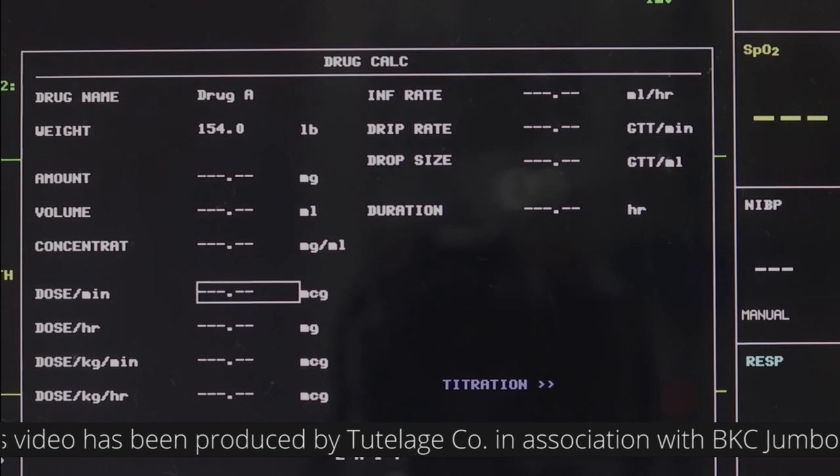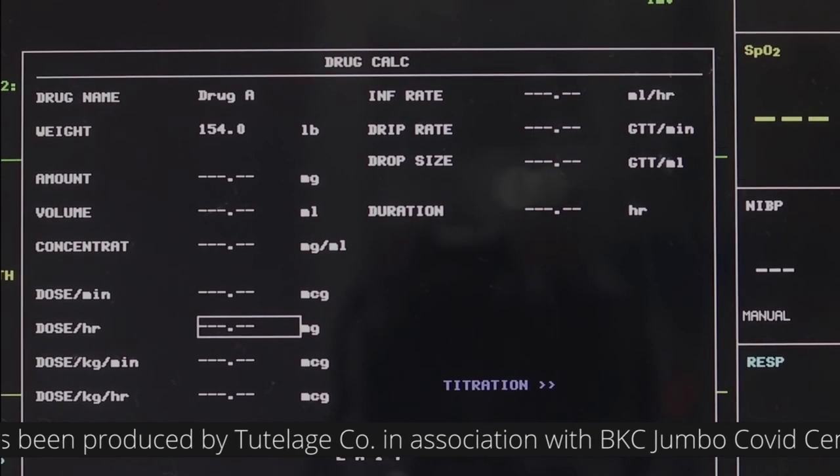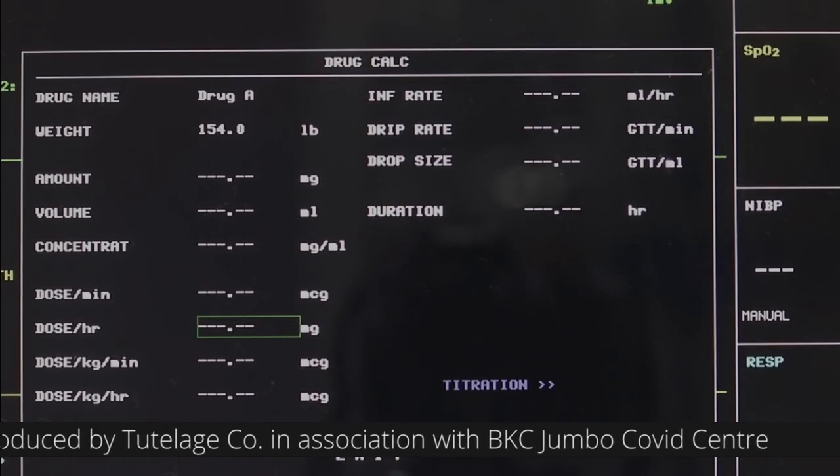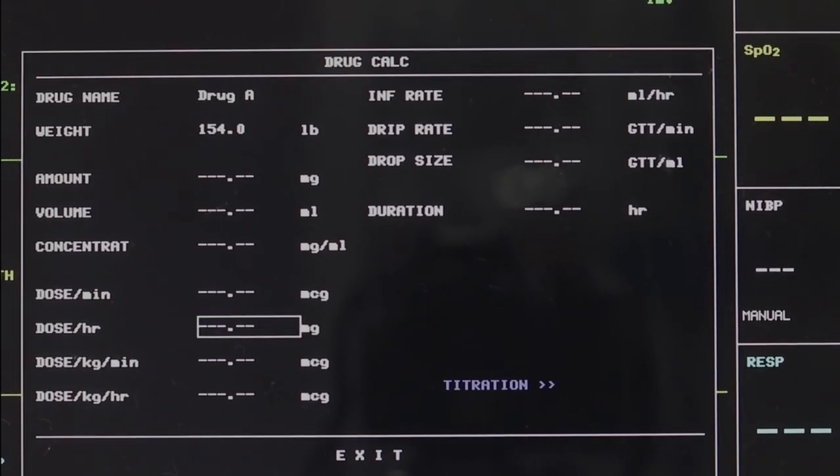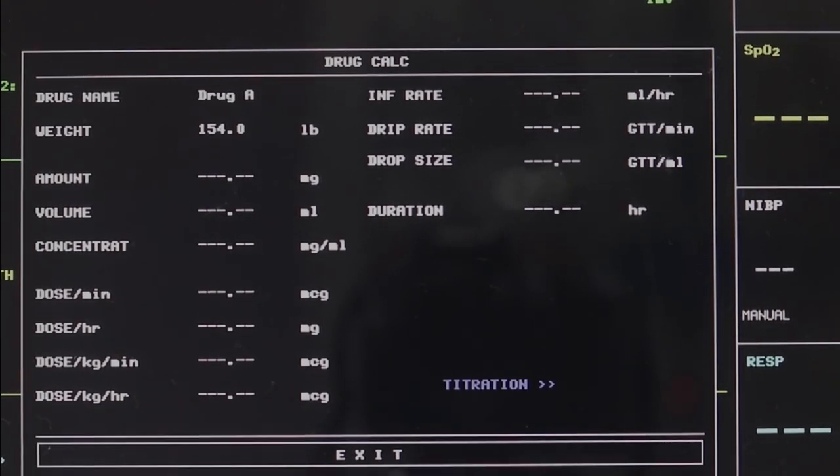In the Drug Calculation window, the operator should first select the drug name to be calculated and then confirm the patient weight. Next, the operator should also enter other known values. Each item has its calculation range.